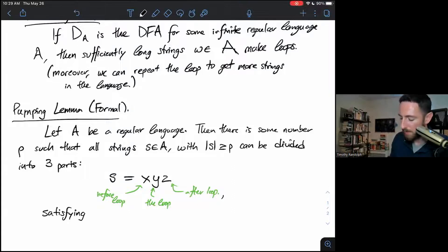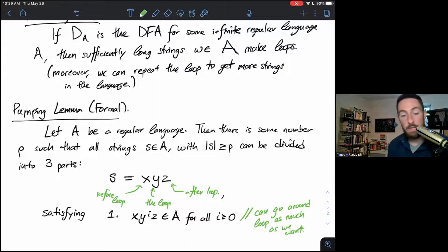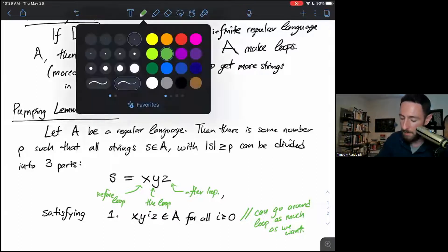And these parts are going to satisfy conditions of loopiness. So they'll satisfy the following three conditions. First condition, X, Y to the I, Z is in the language for all I greater than or equal to zero. What does that mean? It means, so if we got from the start to the finish on the string X, Y, Z, and Y took us around the loop, well then going around Y twice will also get us from the start to the finish. Going around Y 10 times or zero times we'll get us from the start to the finish. So that's our first loopiness condition.